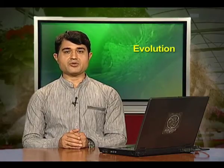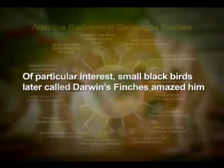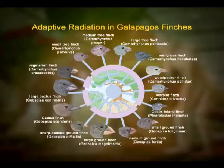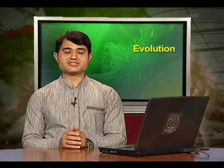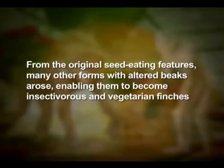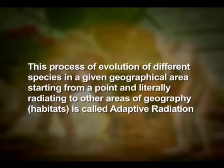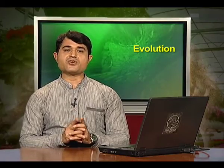There he observed an amazing diversity of creatures. Of particular interest, small blackbirds later called Darwin's finches amazed him. He realized that there were many varieties of finches in the same island, all of which he conjectured evolved on the island itself. From the original seed-eating features, many other forms with altered beaks arose, enabling them to become insectivorous and vegetarian finches. This process of evolution of different species in a given geographical area, starting from a point and radiating to other areas of geography, is called adaptive radiation. Darwin's finches represent one of the best examples of this phenomenon.